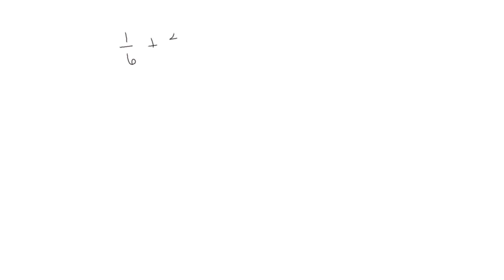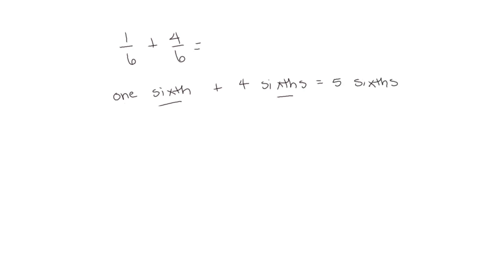We can do the same thing with addition. If we have a number sentence of 1 sixth plus 4 sixths, we can write it out in unit form: 1 sixth plus 4 sixths. Since both units are the same, we add how many we have, and we get 5 sixths. We can write that as a number sentence: 5 sixths. We can also show addition on a number line.